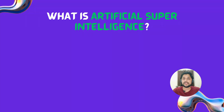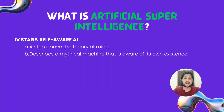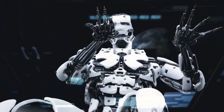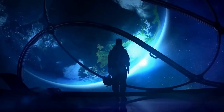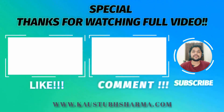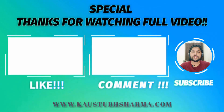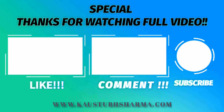The last type of AI is Artificial Super-Intelligence, which would reach the final stage of AI development: Self-Aware AI. A step above Theory of Mind, ASI describes a hypothetical machine that is aware of its own existence and can outperform humans in almost every field, including scientific creativity, general wisdom, and social skills. Thankfully, like Theory of Mind AI, Self-Aware AI does not currently exist — and if you're wondering why I said 'thankfully,' maybe you need to watch some science fiction movies. Thank you so much for watching. Please type 'awesome explanation' in the comment section to let me know you watched till the end. See you next time!